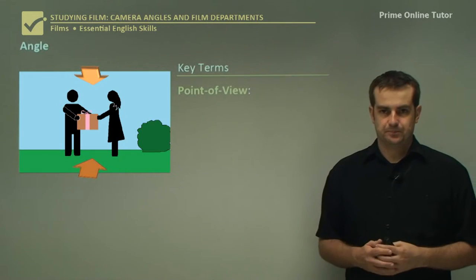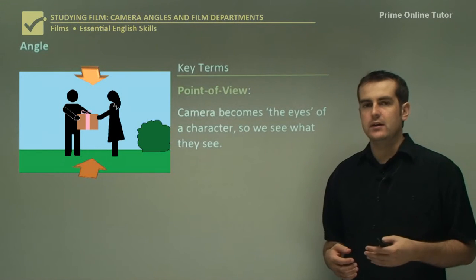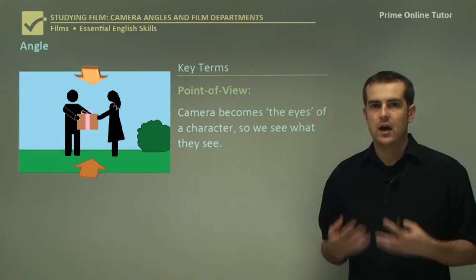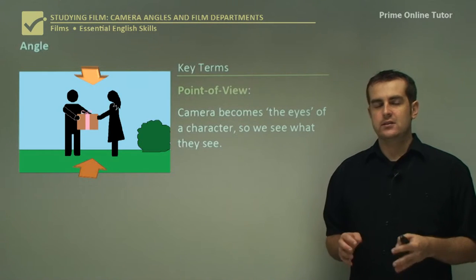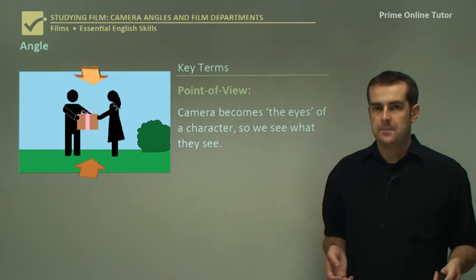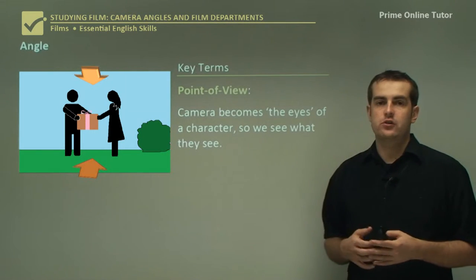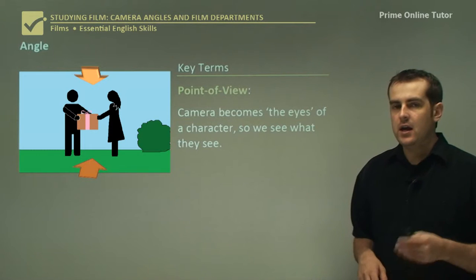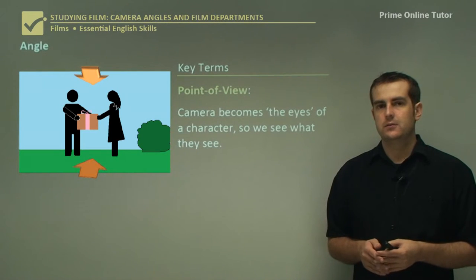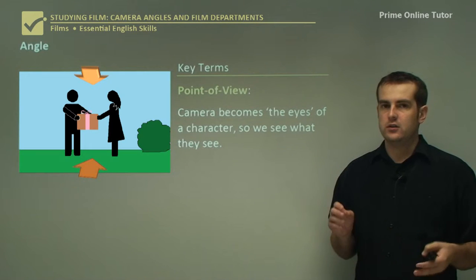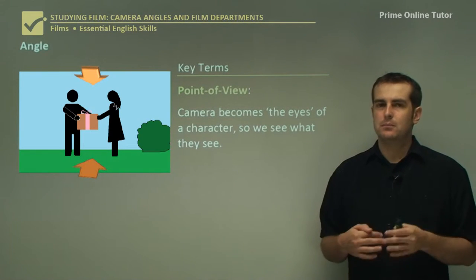Next is point of view. A point of view shot is basically the camera becoming the eyes of a character, so we see what they see. We pretend that we are a member of the cast. In some cases, particularly in mockumentary style films, the camera itself is a character and forms a sort of narrator. Point of view shots generally speaking are from the perspective of a character and help us see the world through their eyes. So the main angles are your high shot, eye level, low shot, and point of view shot.